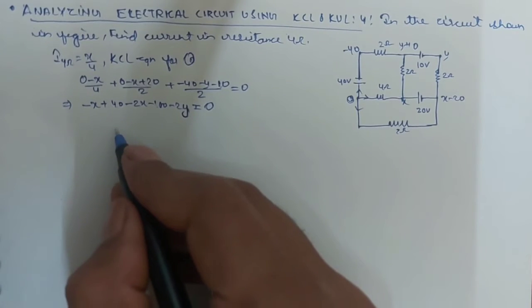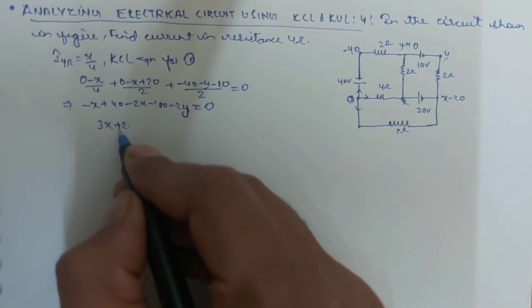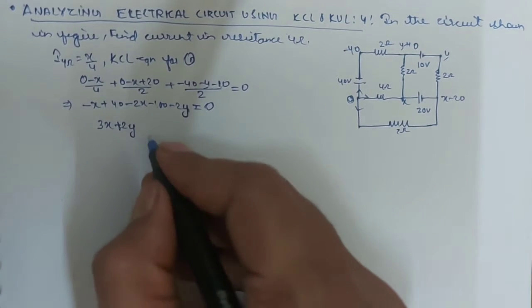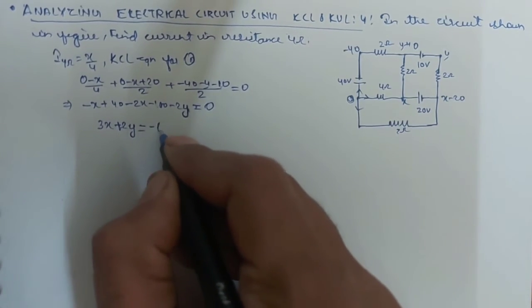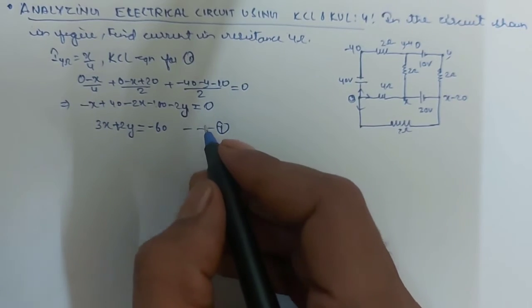minus x plus 40 minus 2x minus 100 minus 2y is equal to 0. So, you will get around 3x plus 2y is equal to minus 60. Taking it as equation 1.